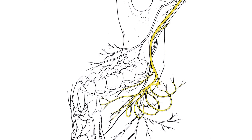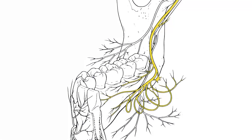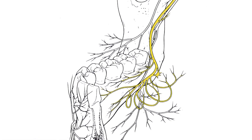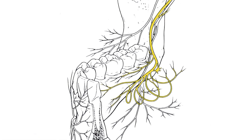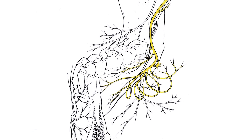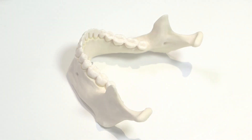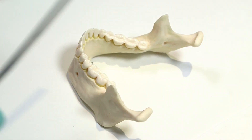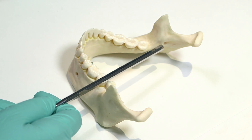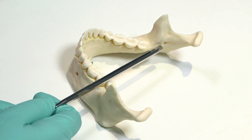The lingual nerve supplies the lingual gingiva, floor of mouth and anterior two-thirds of the tongue. The target bony site is superior to the lingula on the medial border of the ramus of the mandible.